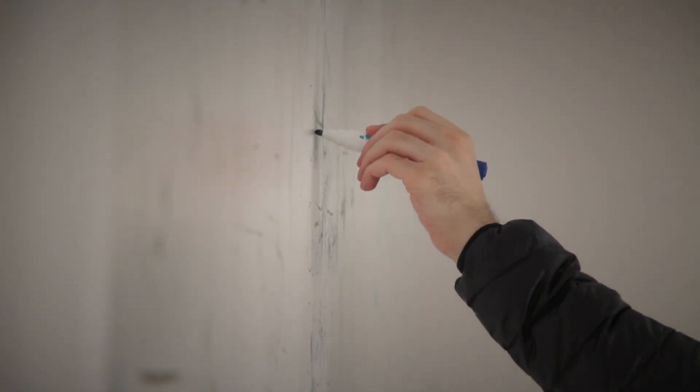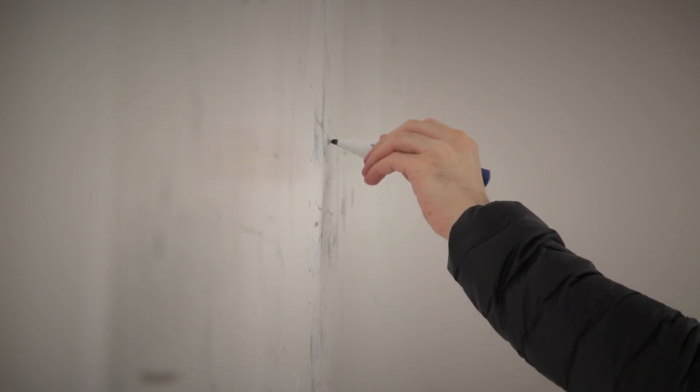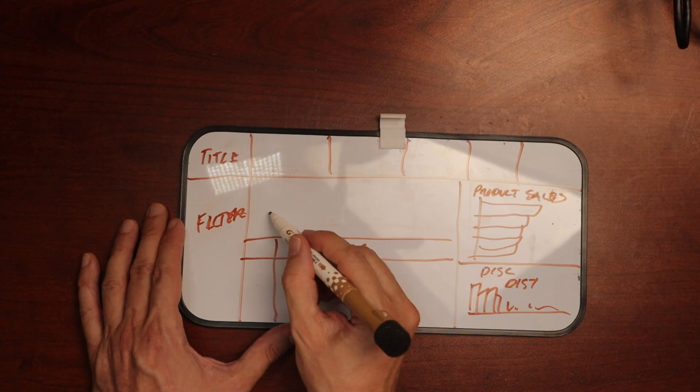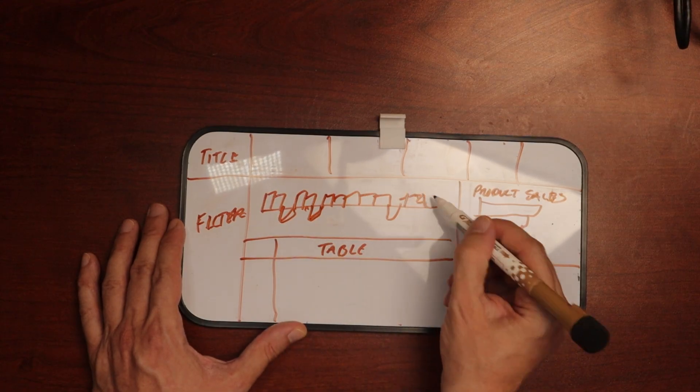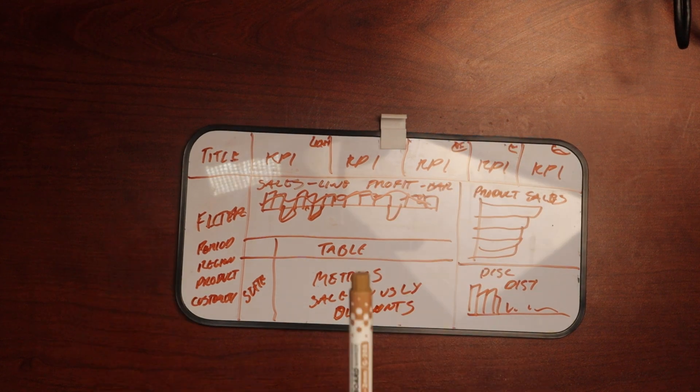Whiteboards are also really great for wireframing. They're generally quite large, giving you more scope to create what you need. If you have one during a meeting while going through requirements, you can sketch on the fly just like with pen and paper. Once you're done, just take a photo on your phone for your reference, then wipe it off and start again.